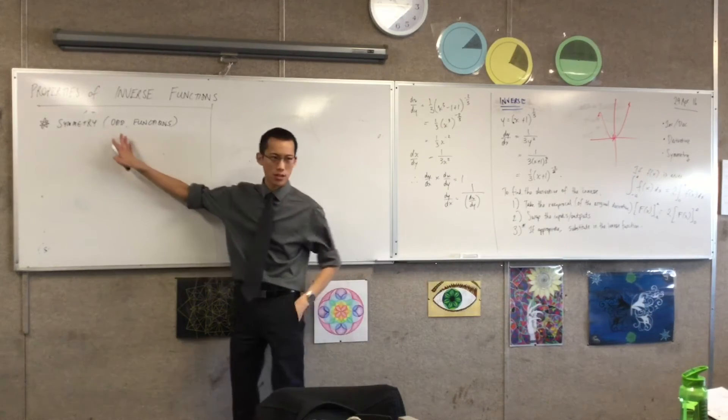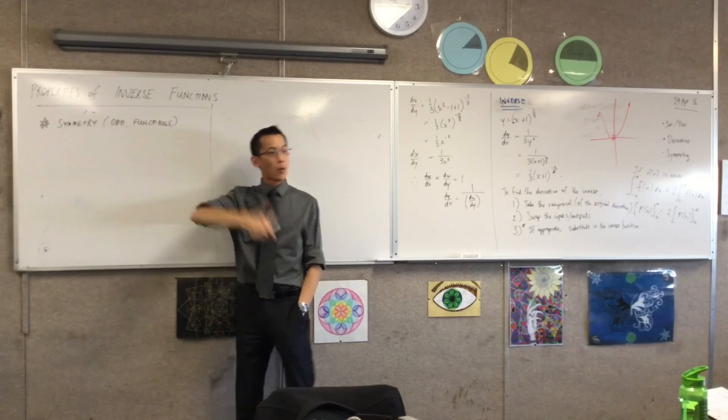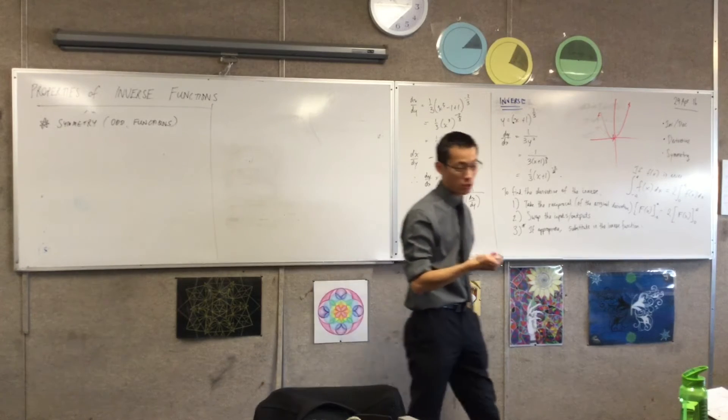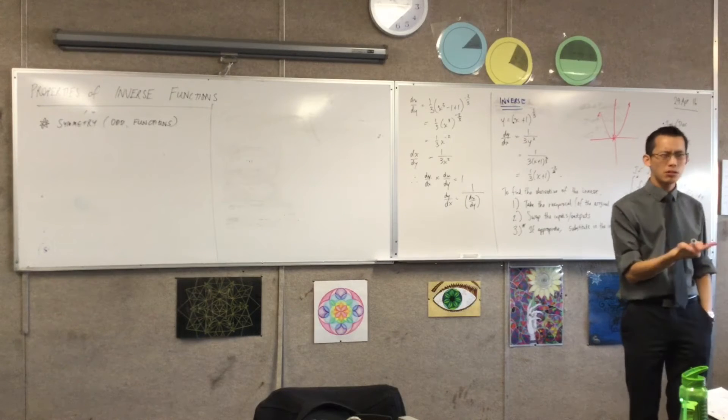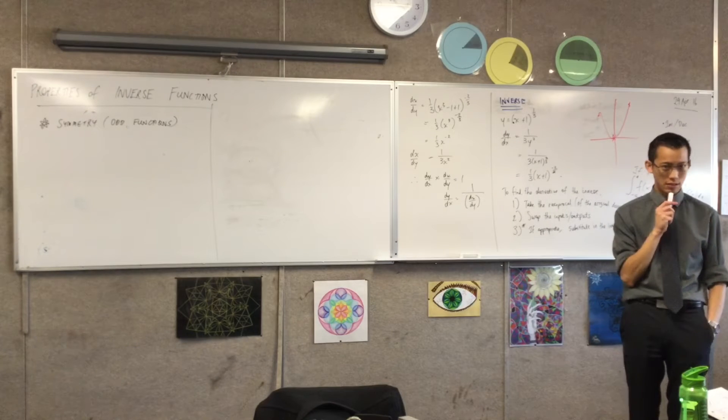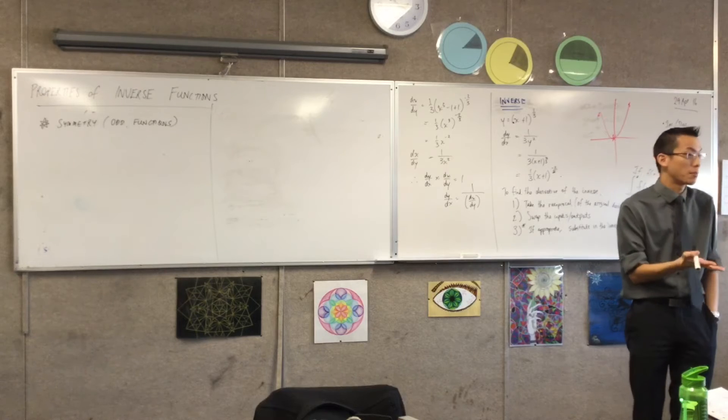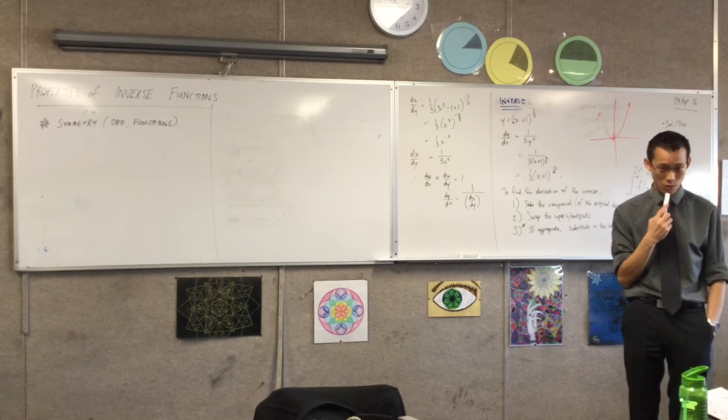Before I show you this picture, I wonder if you can reason out what property might kind of flow from this. If you started with an odd function, number one, what might you be able to conclude about the inverse, I should say? And number two, how would you actually show that that's the case, right? Apart from drawing a picture. Is there a more rigorous way that we could do it?